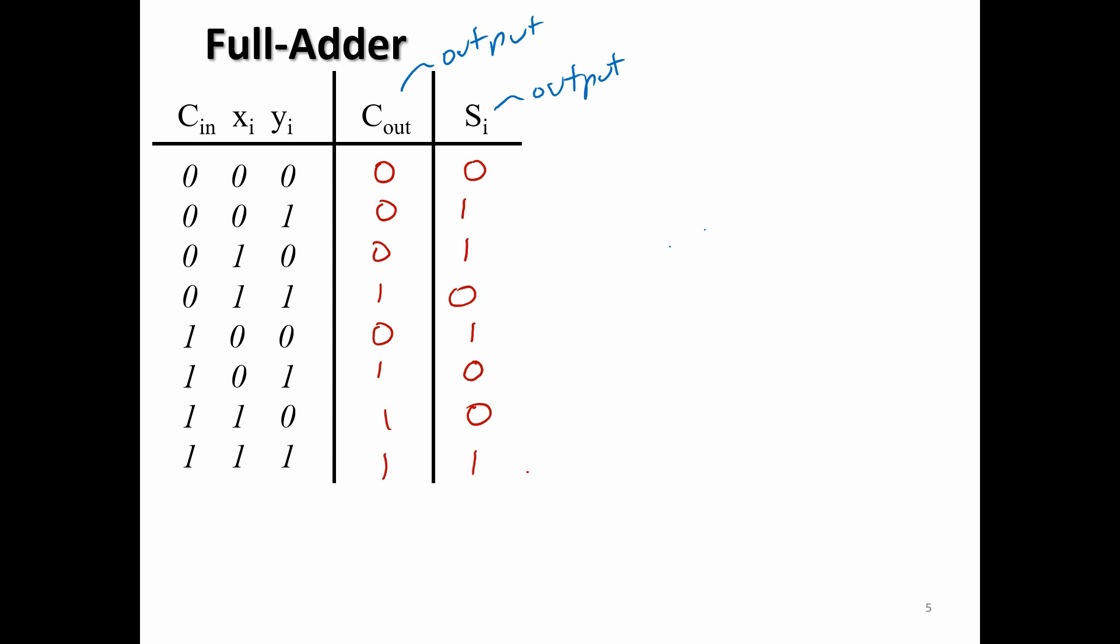If we want to get an expression for this, we can use a K-map, for example. So a K-map for c out. 0, 0, 0, 1, 1, 1, 1, 0. And here we have c in x and y. So 0, 0, 0, 0, 1, 0, 1, 1, and 1.